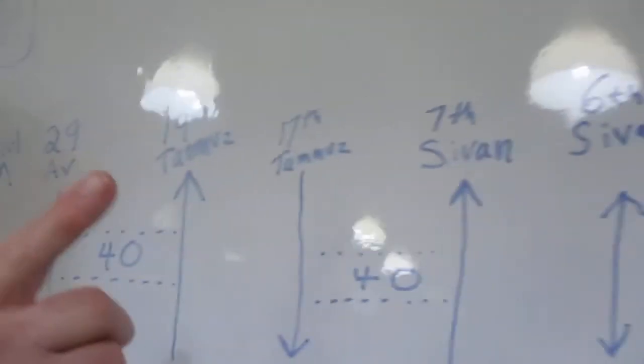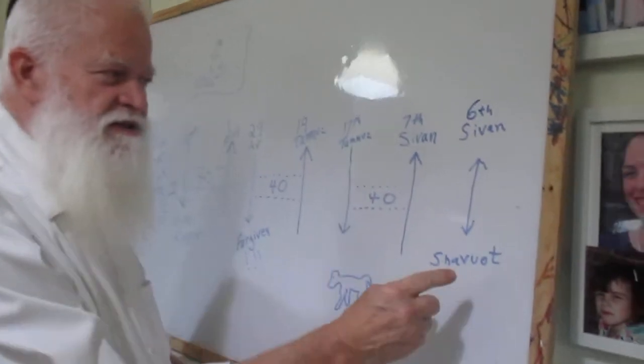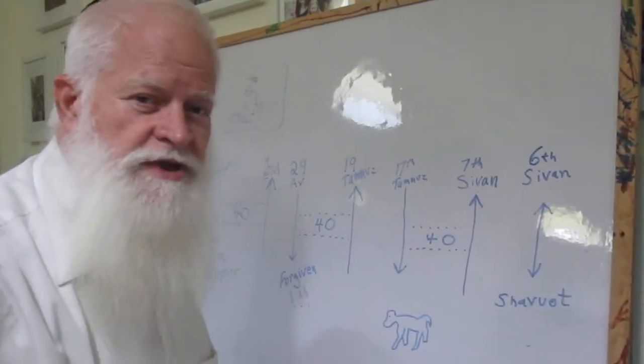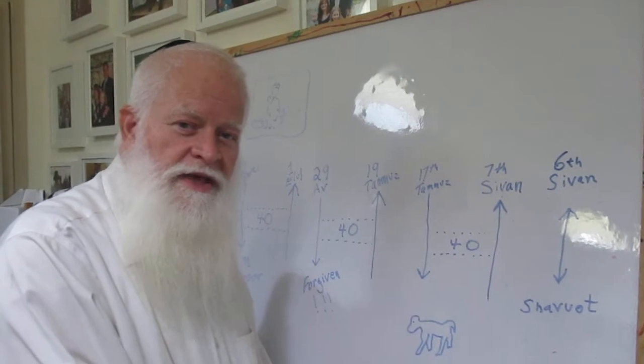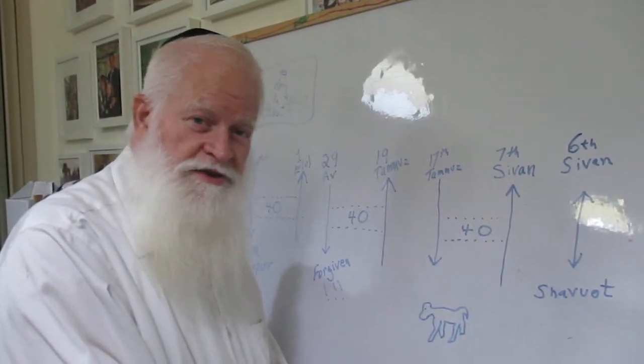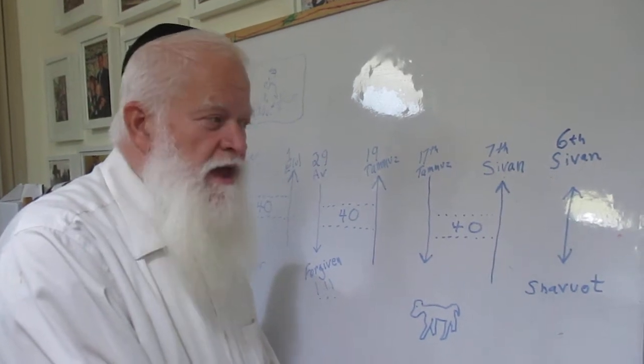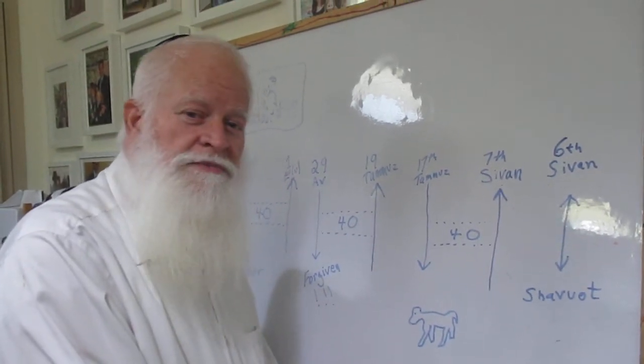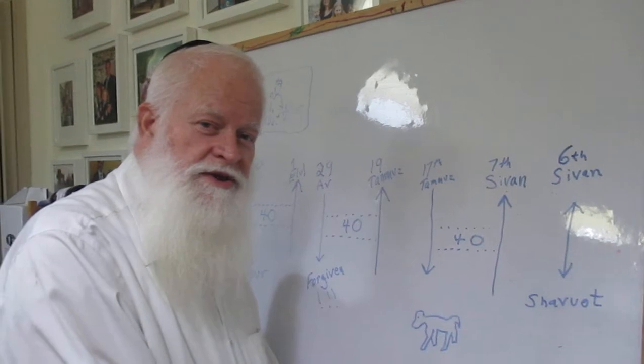The sixth of Sivan is Shavuos. It's also the day that in the desert, the children of Israel approached Har Sinai and Hashem spoke the Ten Commandments to the Jewish people.